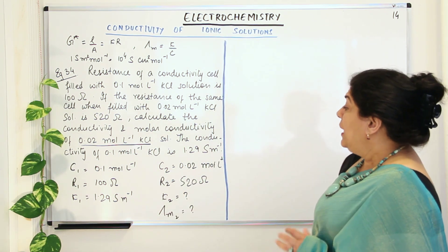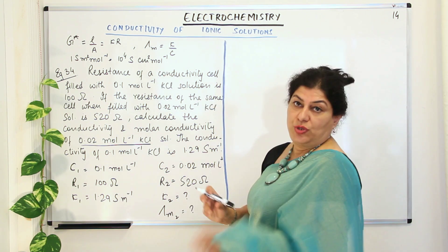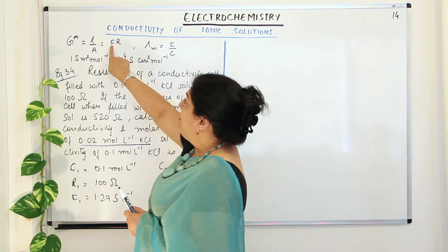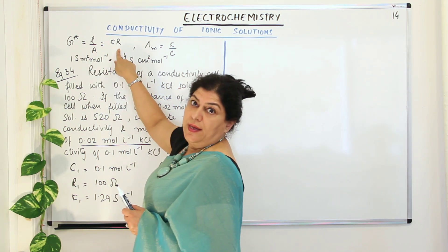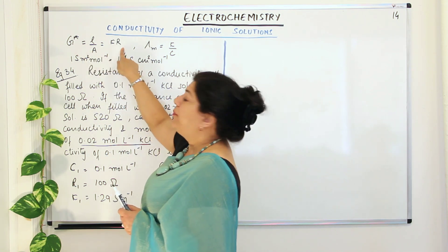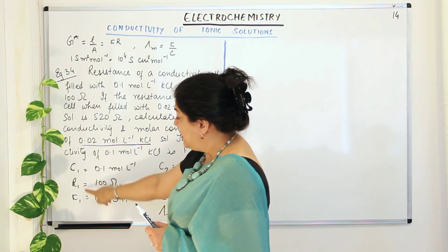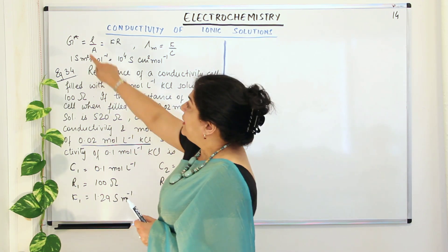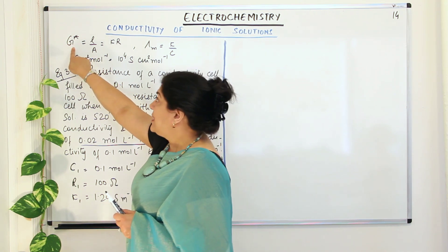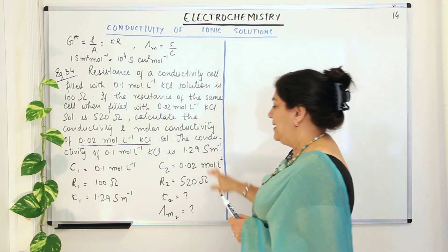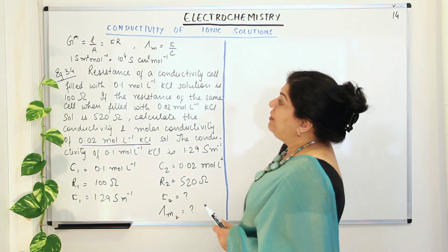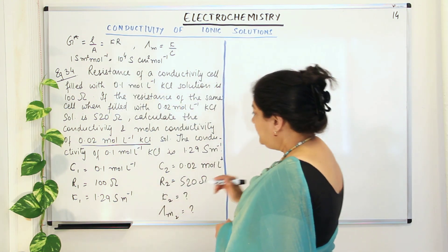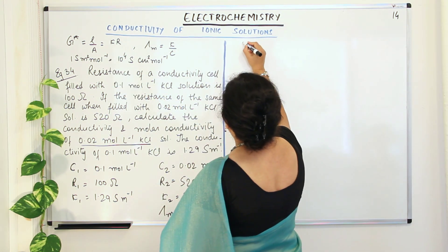In order to find kappa 2, we use the formula kappa = g* / R, where g* is the cell constant. We have the resistance and kappa for the first case, so we first need to find the cell constant. Once we know g*, we can calculate kappa 2 for the second concentration.